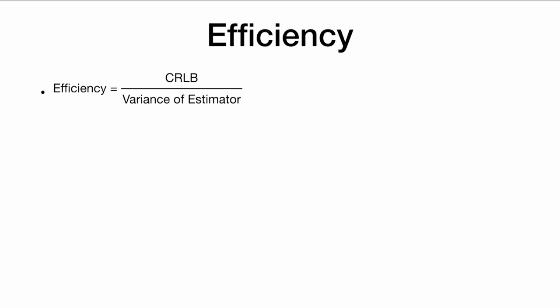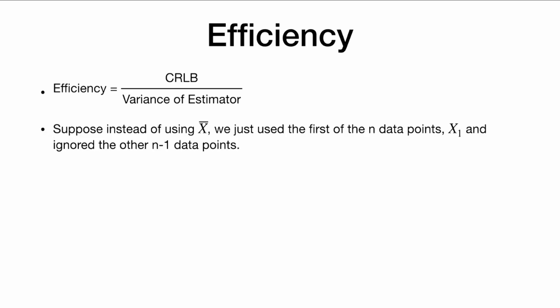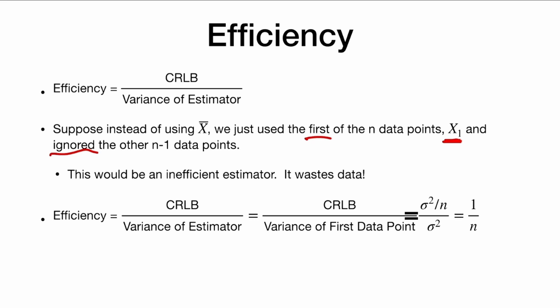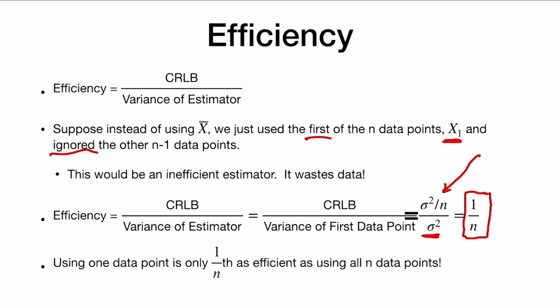Some estimators are not efficient. Suppose instead of using x-bar — the average of all data — we just used the first of the n data points, x1, and ignored all the other data. Obviously that's not going to be very efficient; we threw away most of our data. The efficiency would be the Cramér-Rao lower bound divided by the variance of the estimator. The Cramér-Rao lower bound is still sigma squared over n, but the variance of a single data point is sigma squared. Dividing gives efficiency of 1 over n — using one data point is only one nth as efficient as using all n data points, which is exactly what we would expect.